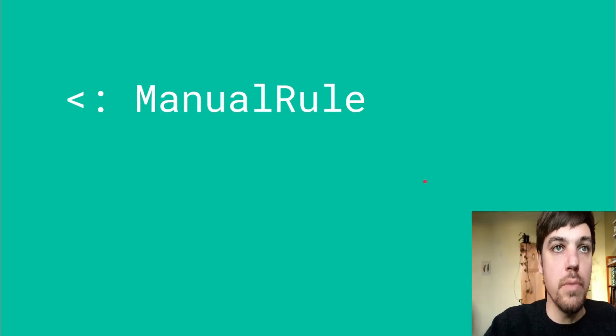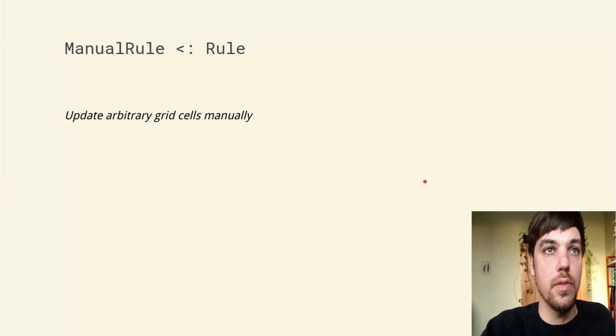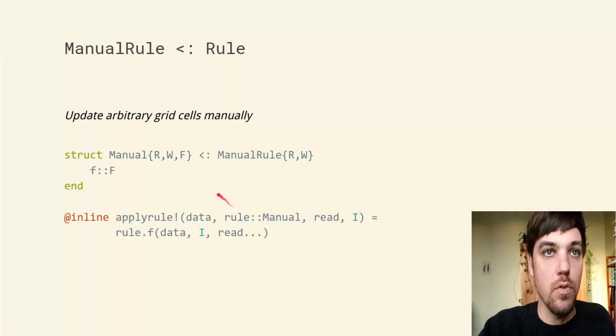The next kind of rule is a manual rule. These update arbitrary cells manually. The formulation can be very similar to a cell rule, except we use the apply rule method with a bang afterwards, because we actually need to write to the data object.